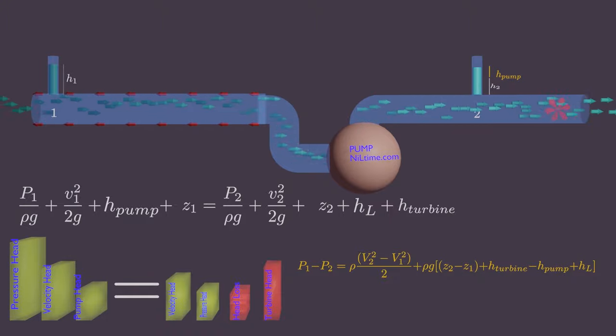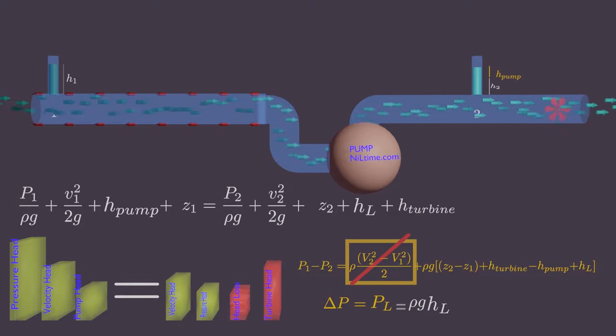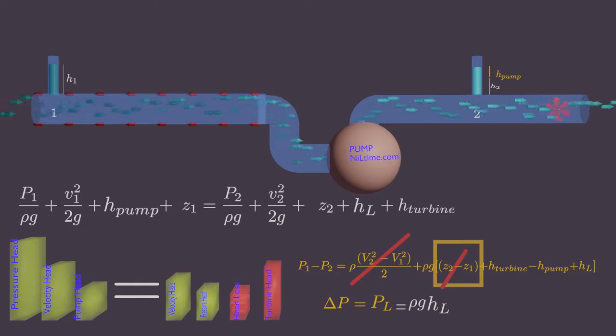If you look at this equation properly, pressure drop will be equal to pressure loss when the velocity and datum change is constant and there is no pump or turbine work.